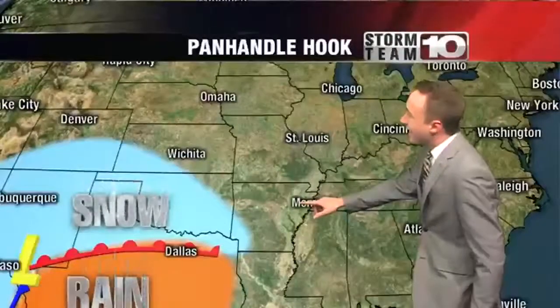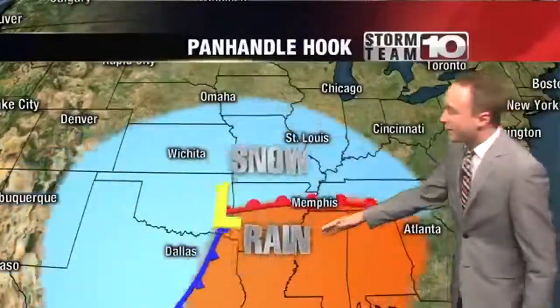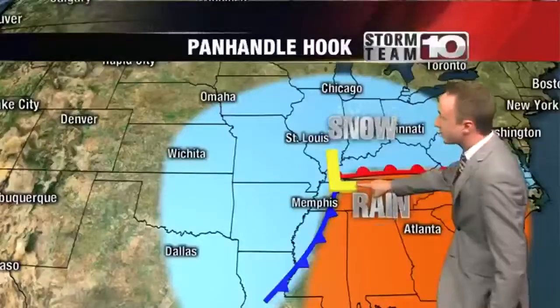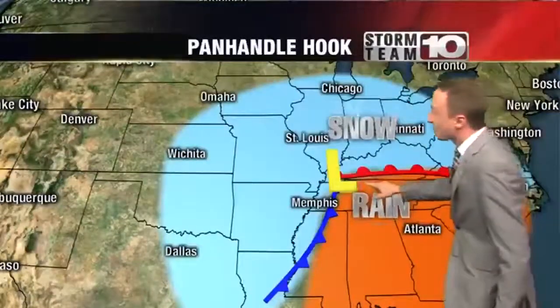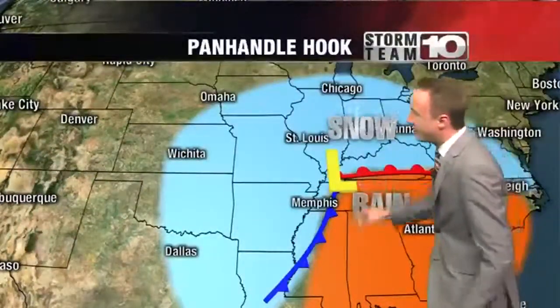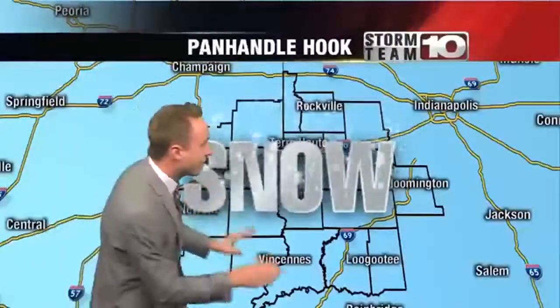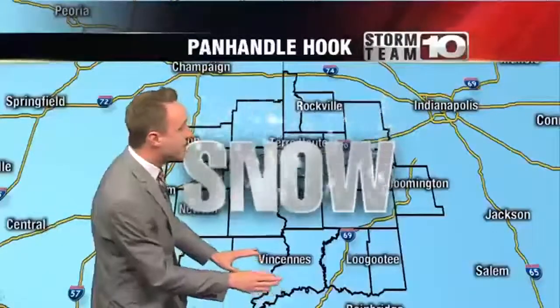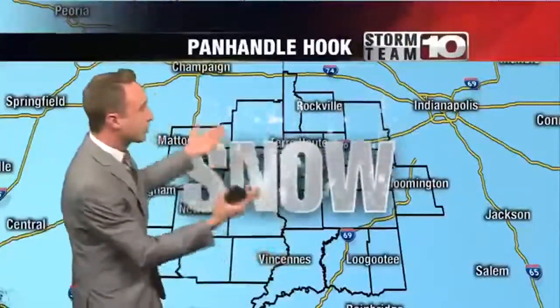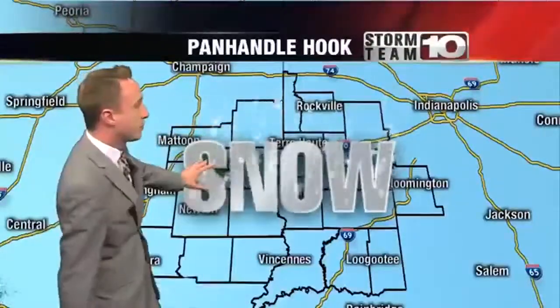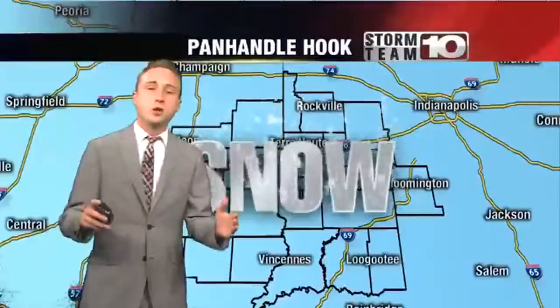But every once in a while, you're going to see this storm take a wider turn and almost head right for Kentucky. And when this storm does that, this is the storm that's going to provide the most amount of snow for the Wabash Valley. Just because of how far south that warmer air is and how much cooler air is impacting the Wabash Valley, we're going to see a lot of snow anytime we get a Panhandle Hook.